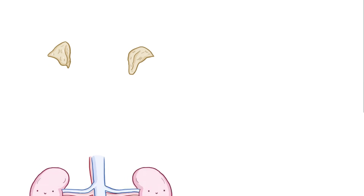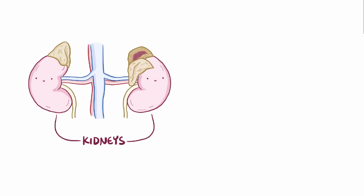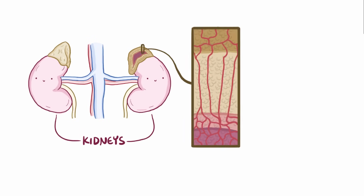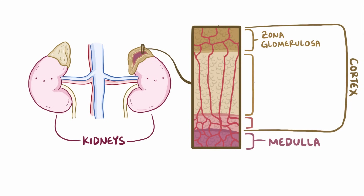There are two adrenal glands, one above each kidney, and each one has an inner layer called the medulla and an outer layer called the cortex, which is subdivided into three more layers: the zona glomerulosa, the zona fasciculata, and the zona reticularis.